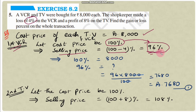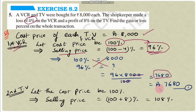Using cross multiplication: selling price of VCR = 96 × 8000 ÷ 100 = 96 × 80 = 7680 rupees. So the selling price of VCR is rupees 7680.